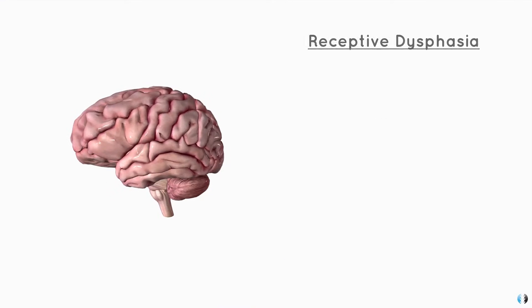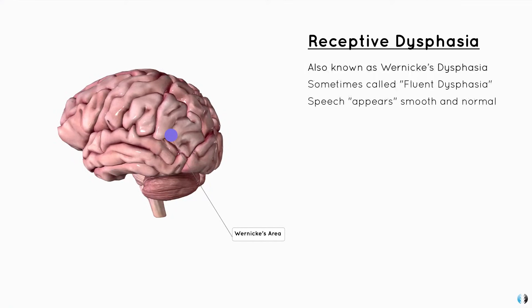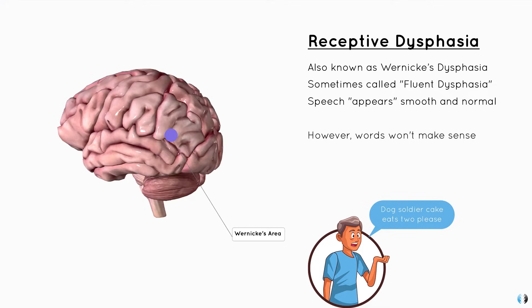We then have receptive dysphasia, which is said to occur in Wernicke's area of the brain, and thus is sometimes referred to as Wernicke's dysphasia. Patients with this type can speak what appears to be fluent language — they speak with normal speed and tone, and it's not effortful. However, the words don't make sense. Patients may use words that don't exist, or words that sound similar to what they actually want to say, like saying 'mood' instead of 'food', or 'link' instead of 'drink'. Or sometimes the words may make no sense at all — the patient may think they're saying 'I want to go for a walk' but instead say something that sounds like a completely different language.